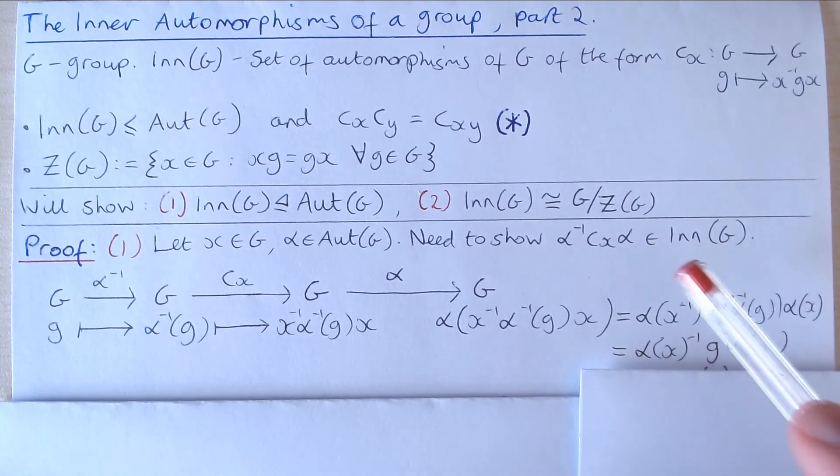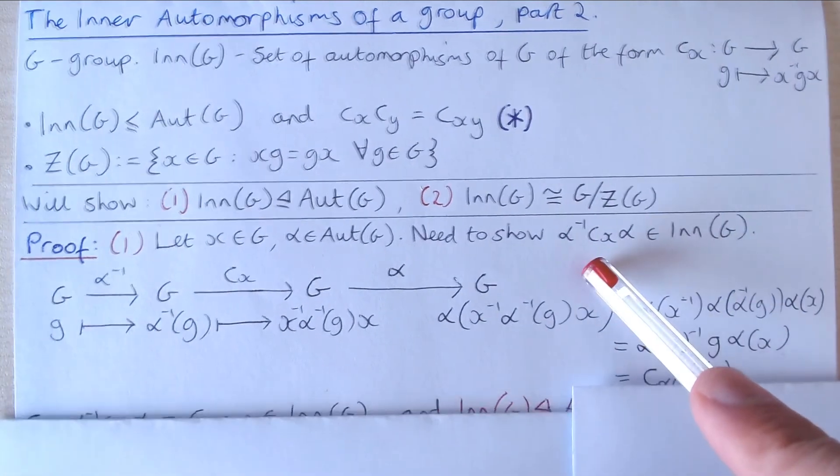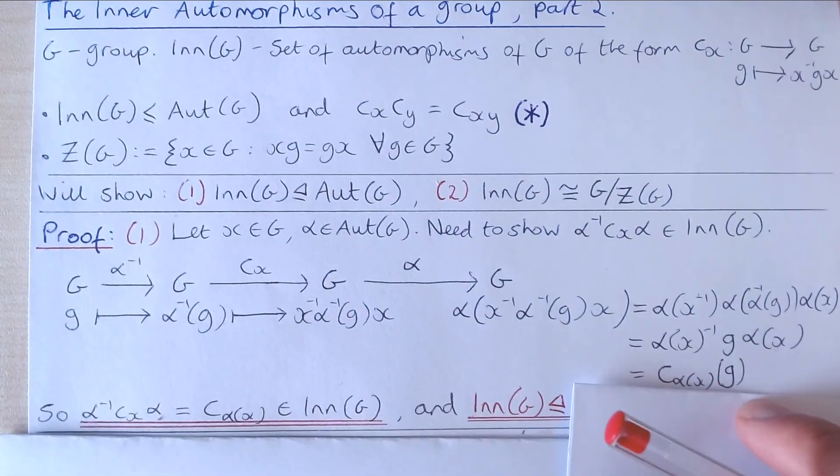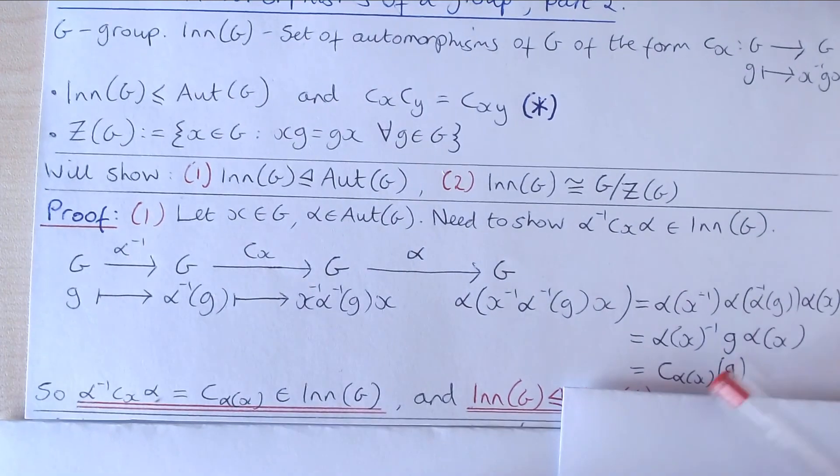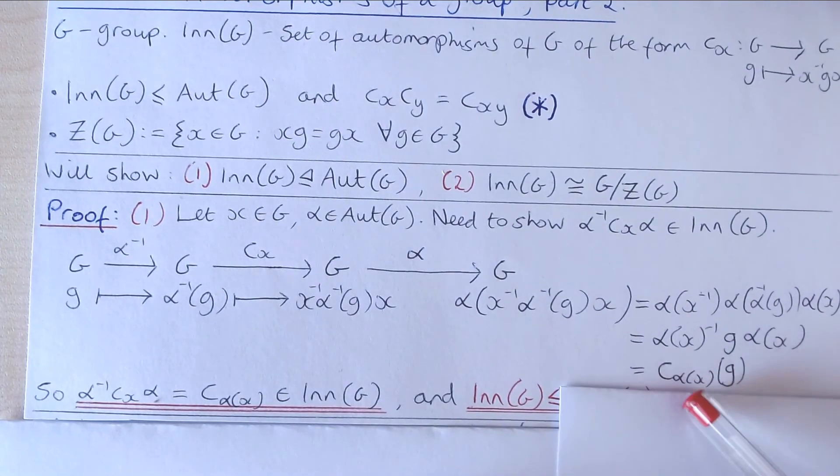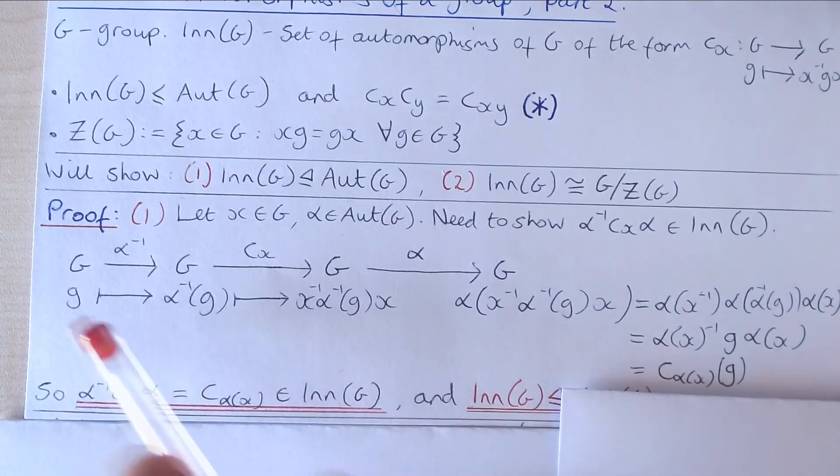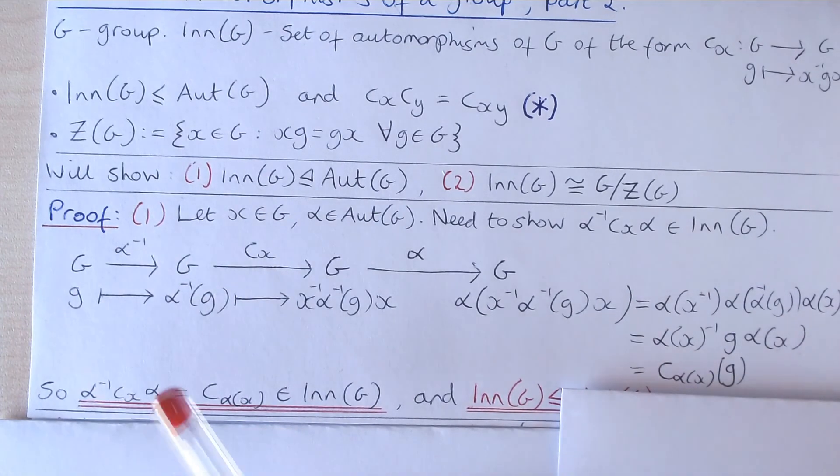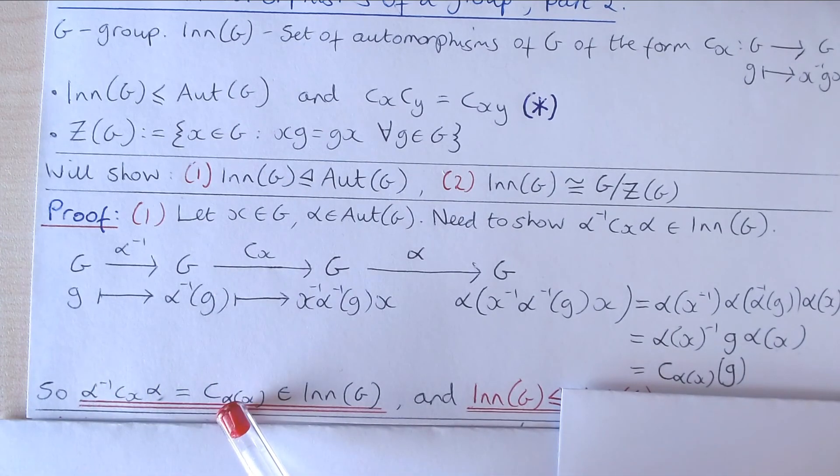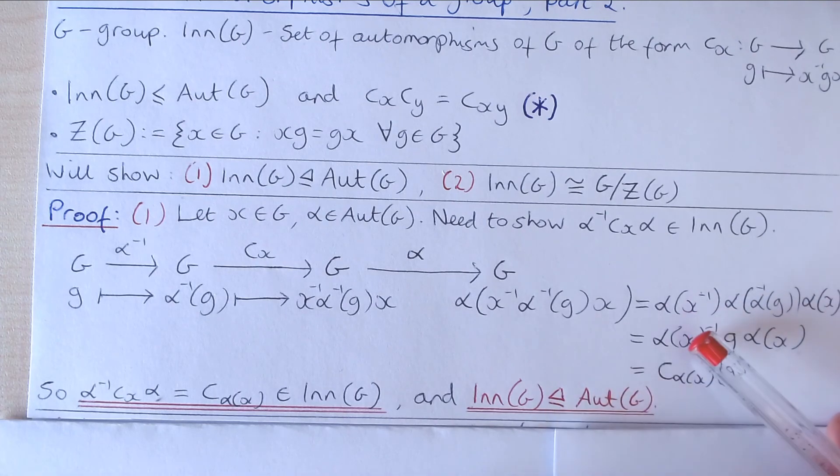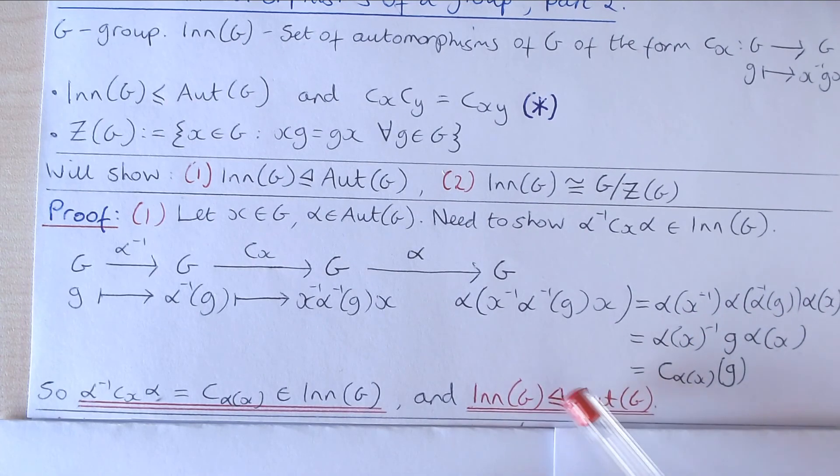And this here is equal to the image of g under the inner automorphism C of α(x). So what we've shown here, as g was an arbitrary element of our group G, we've shown that this composition of automorphisms of G is an inner automorphism of G, and hence we've shown that the inner automorphism group of G is a normal subgroup of the automorphism group of G.